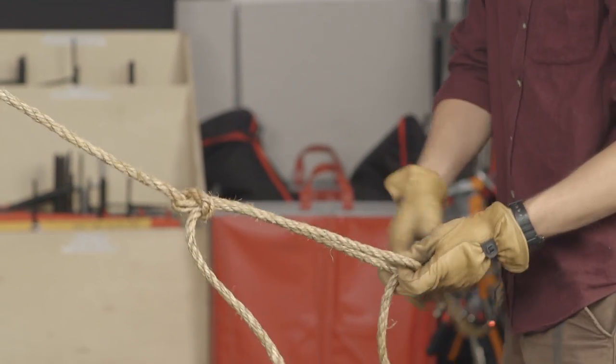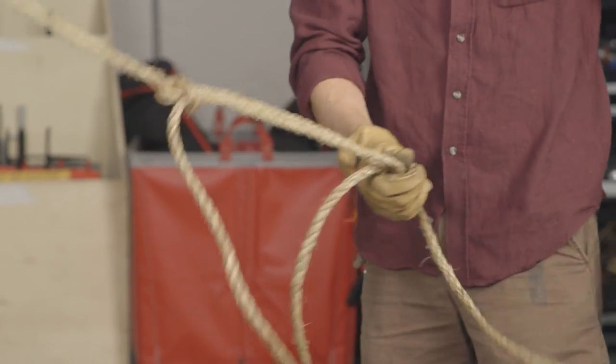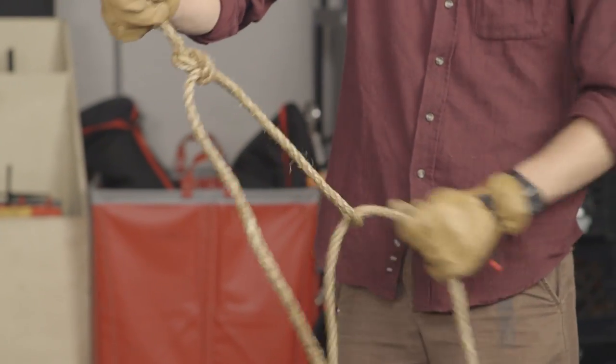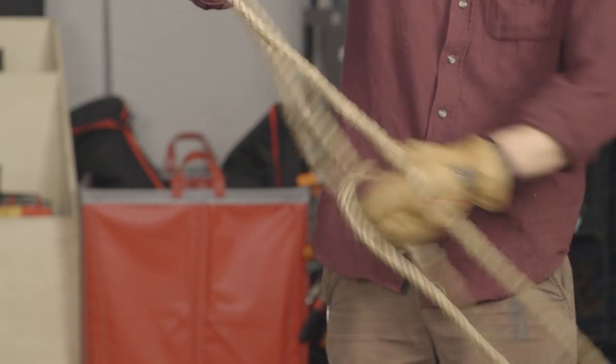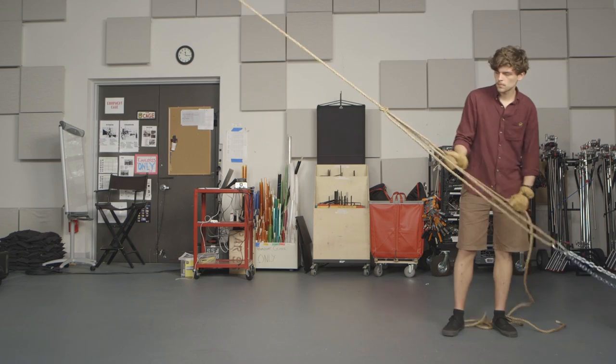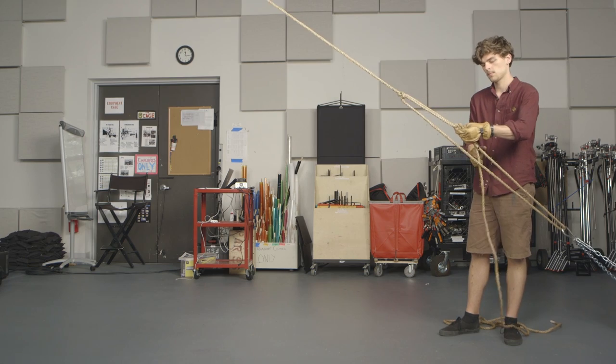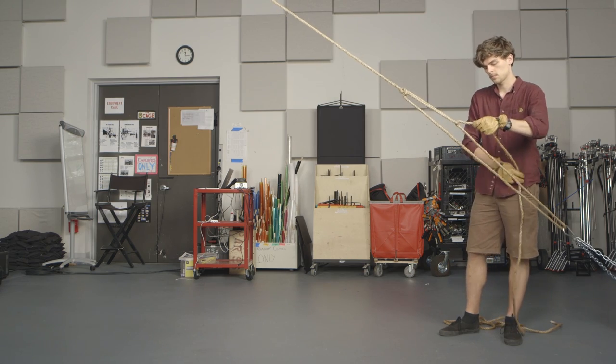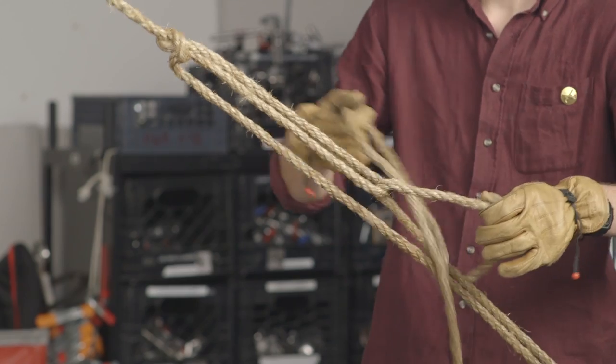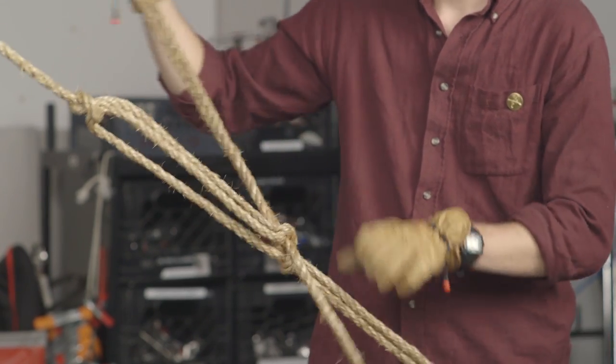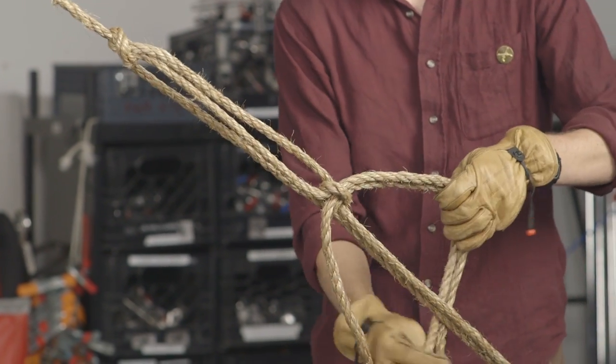Feed the working end through the slip knot and pull towards the anchor point to secure the load. Notice how there is a mechanical advantage created by the hitch. Take the working end and tie two half hitches to lock the knot in place.